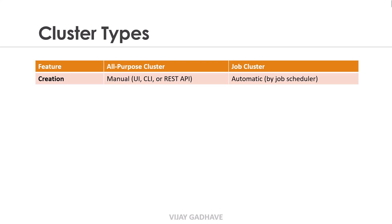The All-Purpose Cluster type can be created manually using the Databricks User Interface, CLI, or REST API. The Job Cluster is created automatically when a job is scheduled, typically using the Databricks Job Scheduler.